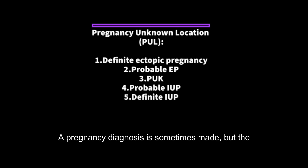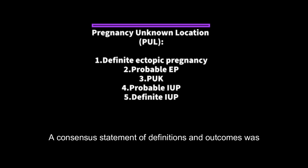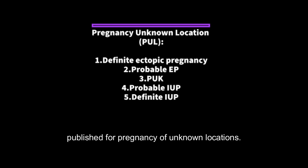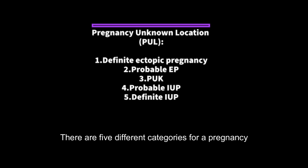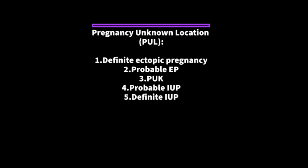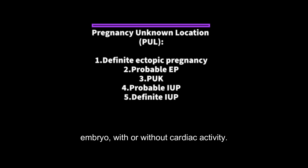A pregnancy diagnosis is sometimes made, but the location of the pregnancy is not readily apparent. A consensus statement of definitions and outcomes was published for Pregnancy of Unknown Locations. There are 5 different categories: 1. Definite ectopic pregnancy — this refers to an extrauterine gestational sac that has either a yolk sac and/or an embryo, with or without cardiac activity.